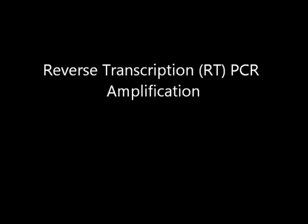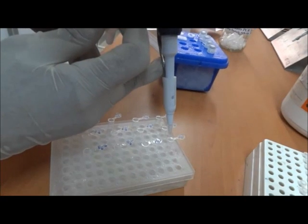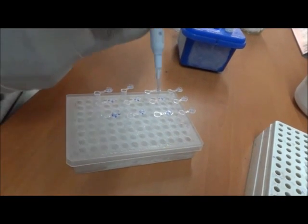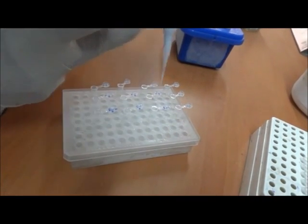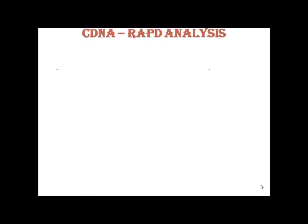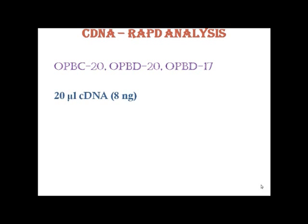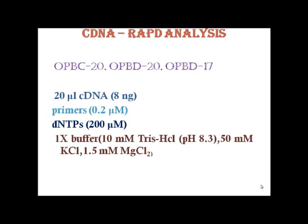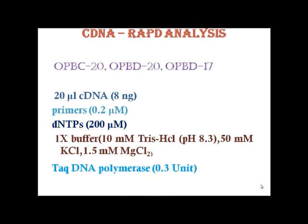RT-PCR amplification. The cDNA-RAPD analysis was performed by RT-PCR. The reaction mixture was prepared using the following PCR components: RAPD primers OPB-C20, OPB-D20, and OPB-D17; 8 ng of cDNA; 0.2 micromolar of primers; 200 micromolar of dNTP mix; 1x concentration of buffer; and 0.3 units of Taq DNA polymerase.